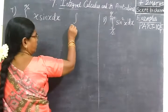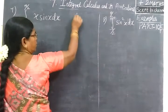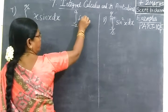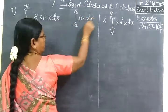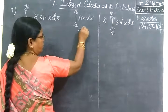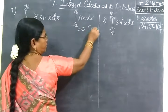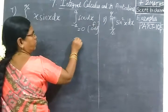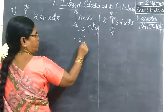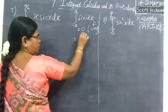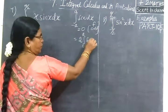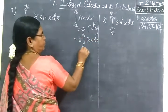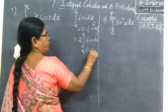For that we are using the property: the integral from minus a to a of f(x) dx equals 0 if f is odd. It equals twice the integral from 0 to a of f(x) dx if f is even.